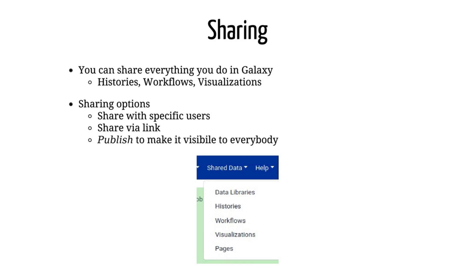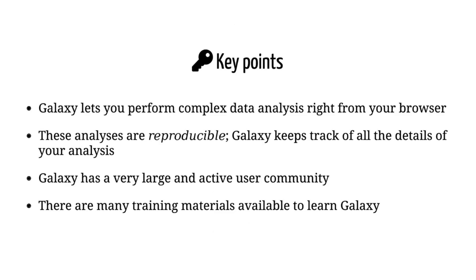Everything you do in Galaxy can be shared — you can share your history, your workflow, and your visualizations. There are different ways to share your work: you can share it with specific Galaxy users, or you can get a share link that you can send to anybody. If you publish your work it will be visible to everybody.